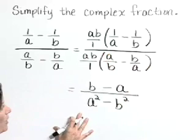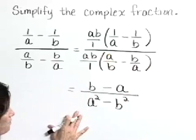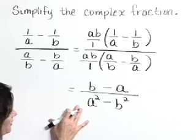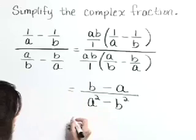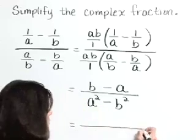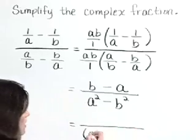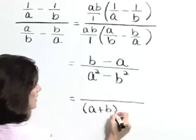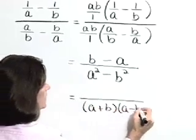So we've taken a step and we've gotten rid of the complexity of the problem, the minor fractions. Now let's simplify. This denominator is a difference of squares, and it's going to factor as A plus B times A minus B.